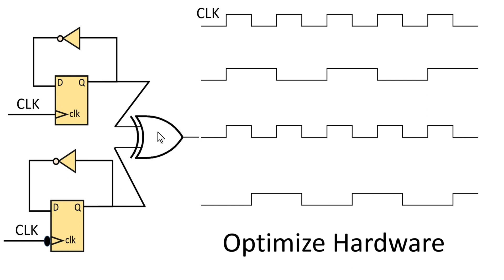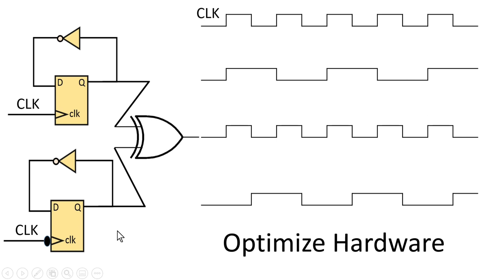Let us look at the output of the first clock divider working at the positive edge. Now compare it to the output of the negative-edge-triggered divider. If we place a negative-edge-triggered flip-flop at the output of the first divider, we get the same signal as the second divider's output. So we don't need a separate clock divider at the negative edge — just add a negative-edge flip-flop after the first divider, then feed both into an XOR gate.